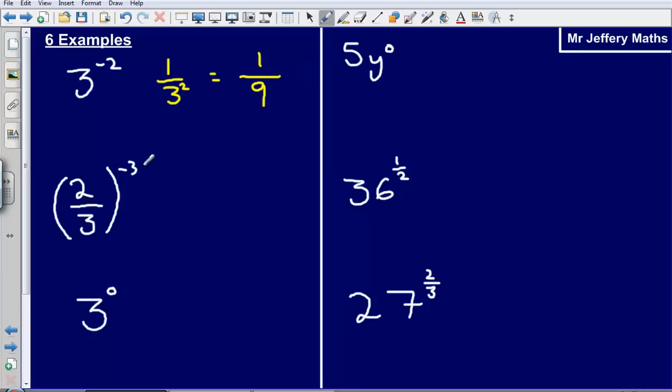Next up we've got 2 thirds raised to the power of negative 3. In this example we're just going to take the reciprocal again, so we get 3 halves. When we do that the negative 3 becomes a positive. So we've got 3 cubed, 3 cubed is going to give us 27 and then 2 cubed is going to give us 8. So our final answer will be 27 over 8.